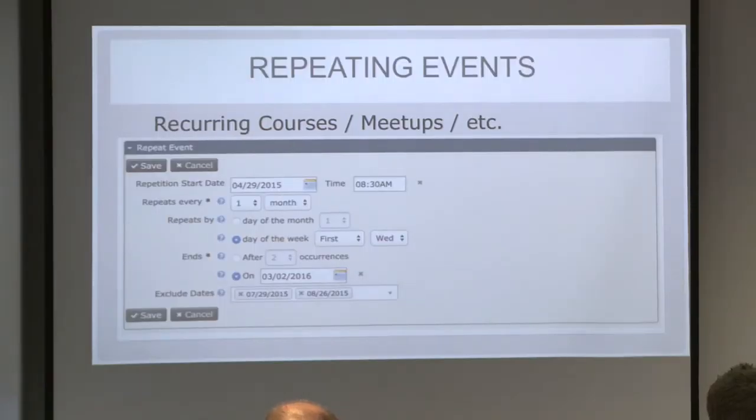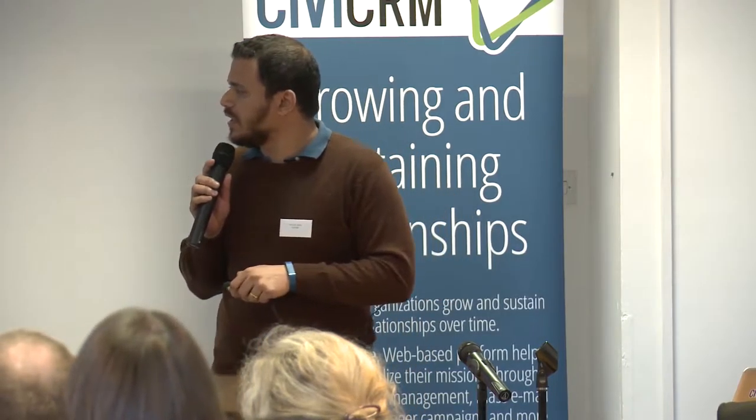We added the same settings for events. Now you can create recurring courses or recurring events with basic settings like how often it repeats every month, what day it ends, and you can also configure exclusions. The system automatically detects what dates to consider, what to exclude, and automatically creates the recurring events and activities.